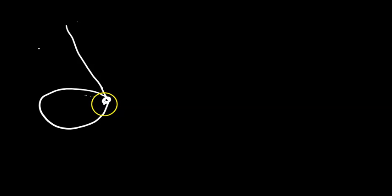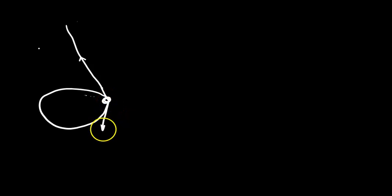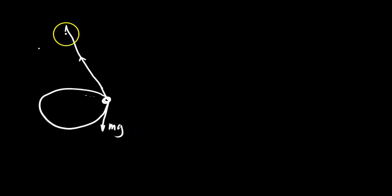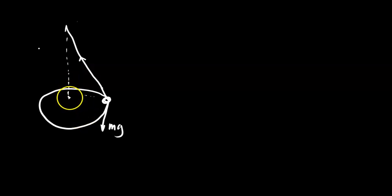Now if I have a pendulum attached to a string, when my pendulum begins to swing it will form a circular motion — it will move in a circular path. The string also has a tension, and the pendulum has a weight. Let's call that weight mg.